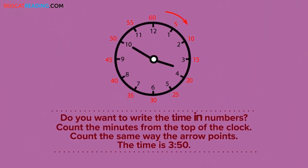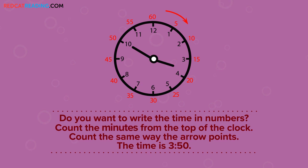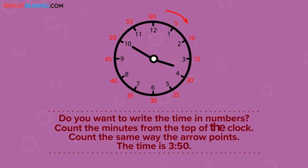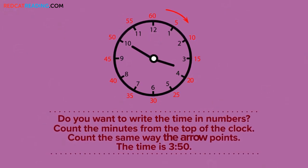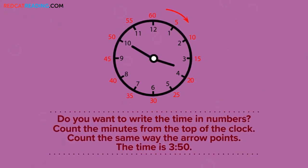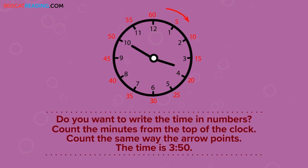Do you want to write the time in numbers? Count the minutes from the top of the clock. Count the same way the arrow points. The time is three fifty.